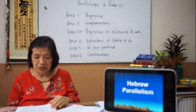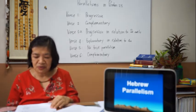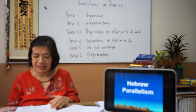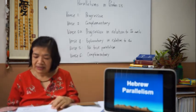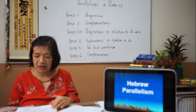Number seven is Janus parallelism: this involves the use of a single term with two different meanings, allowing for a double entendre. The first meaning is expressed in the first line and the second meaning in the next line. For instance: 'The blessings of your father surpass the blessings of the eternal mountains, or the desirable things of the age-old hills.'